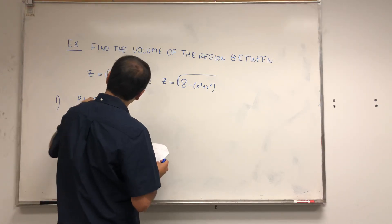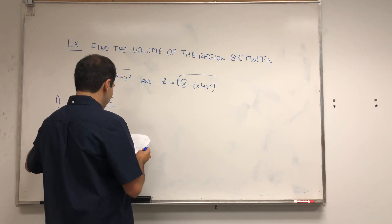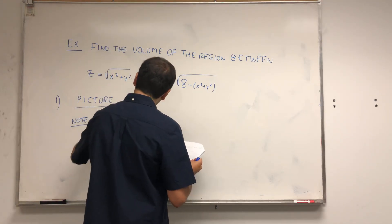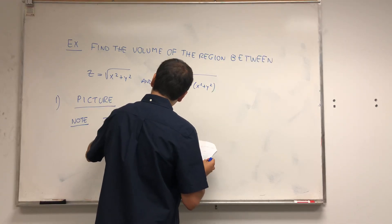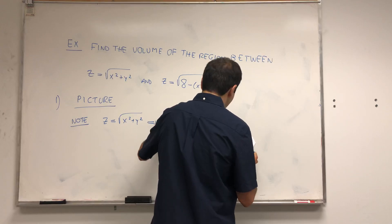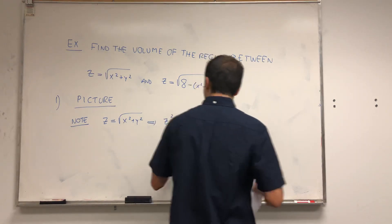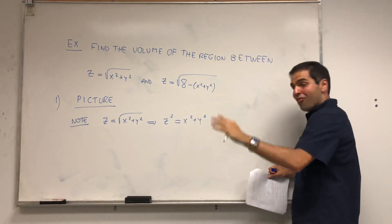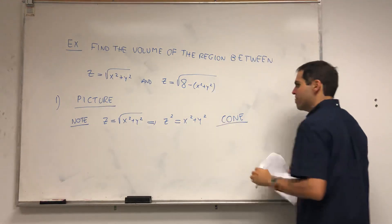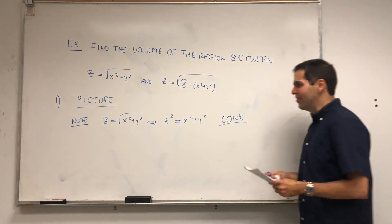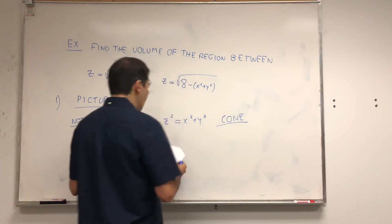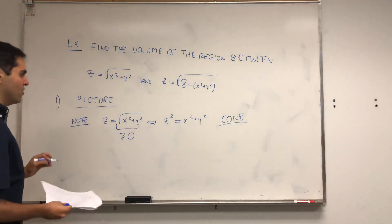Let's figure out what those surfaces are. Note z equals the square root of x squared plus y squared, that is z squared equals x squared plus y squared. This is a formula people should know — that is a cone, an ice cream cone. Moreover, since z is greater or equal to zero, this will be the upper part of a cone.